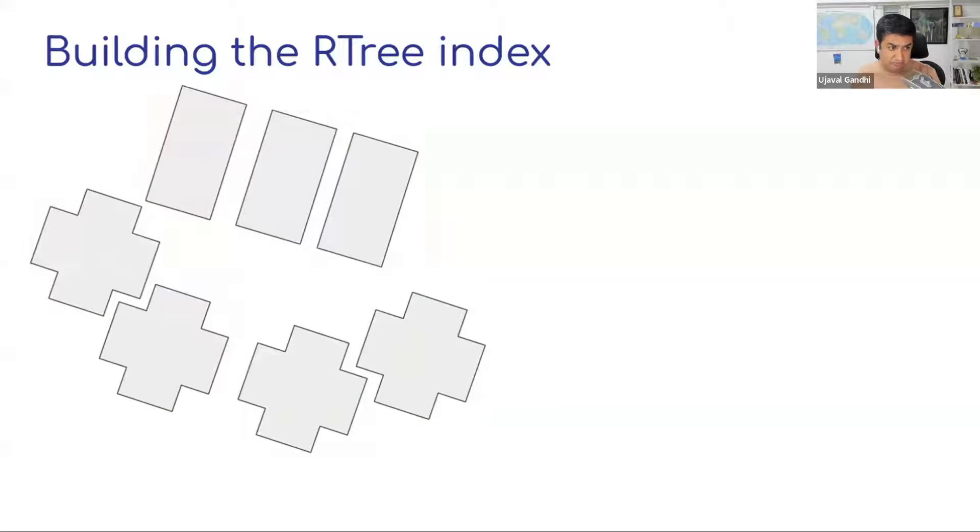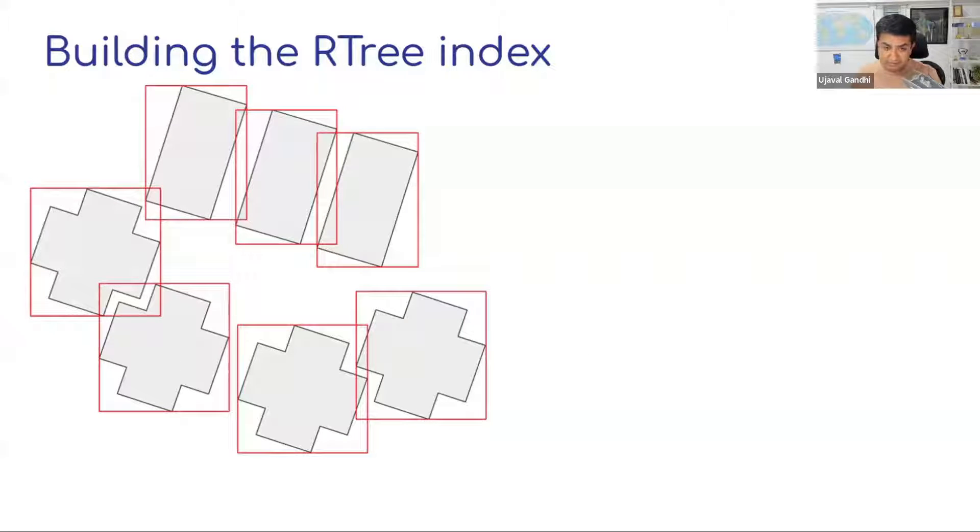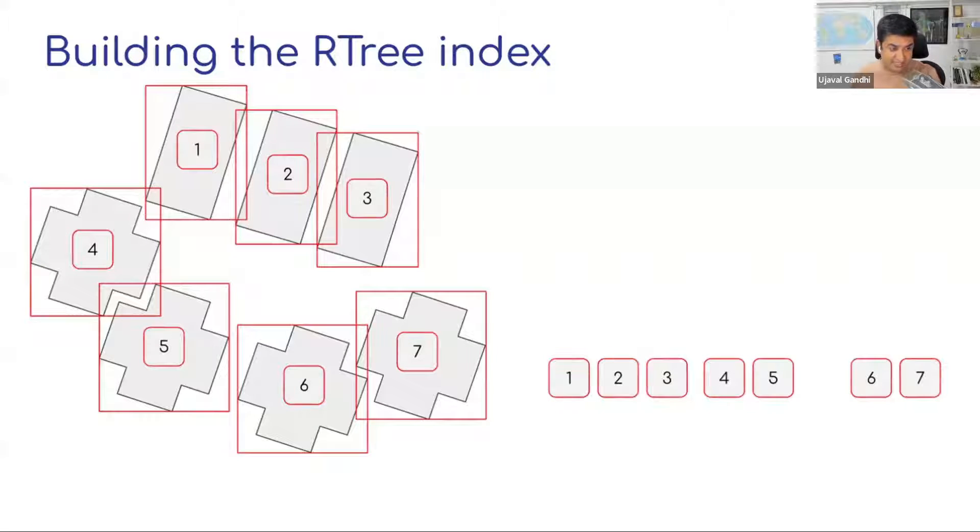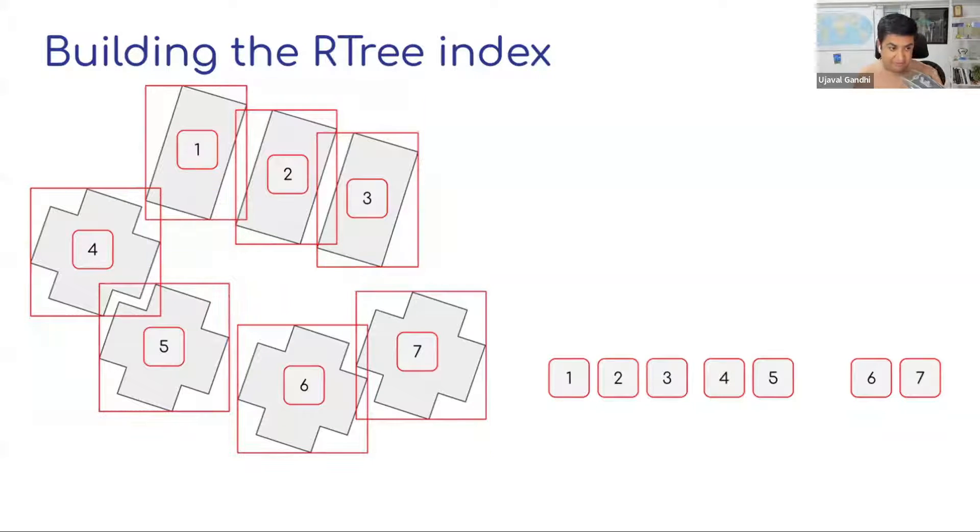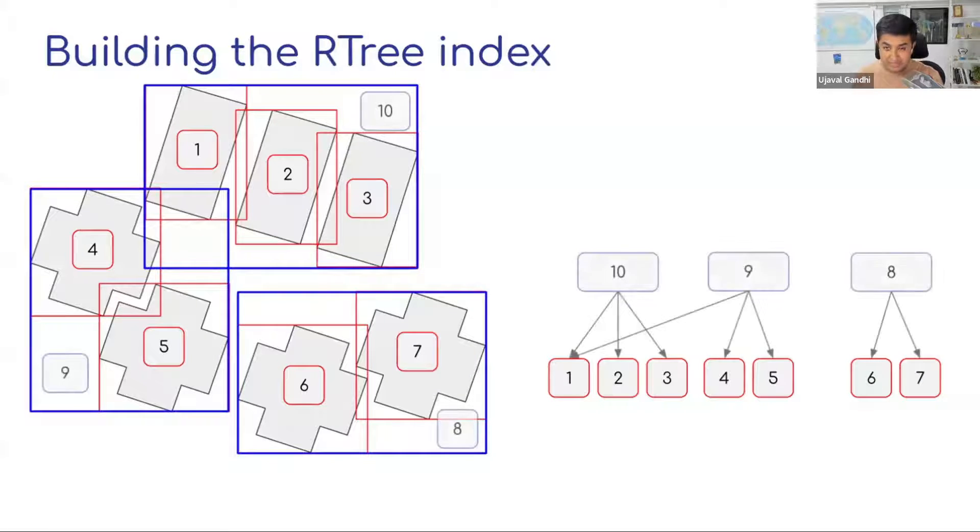So bounding boxes are super fast to compute and they represent the bounds of geometry. That means geometry can exist inside of it, but it cannot exist outside of it. So it's a good way to say my geometry is inside of this rectangle. And you then say I will find rectangles that are close to each other. So let's say I have seven rectangles and I'll say I will group all the rectangles that are close together into another rectangle. So I have six and seven which are close to each other. I'll group them into another bounding box. I have four, five which are close to each other. I'll group them into another bounding box. One, two, three into another bounding box.